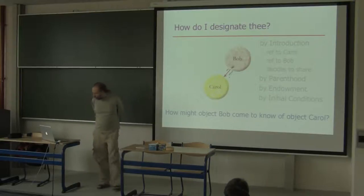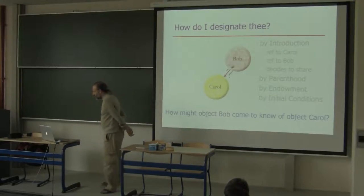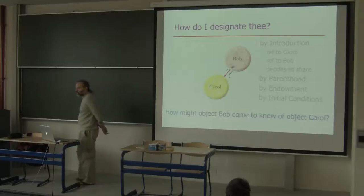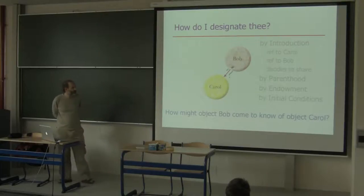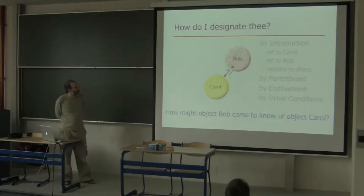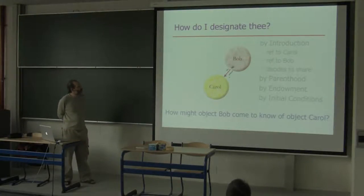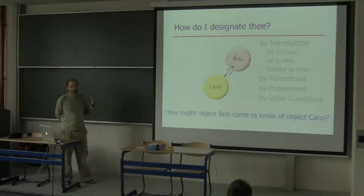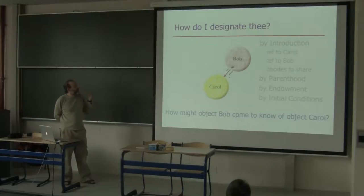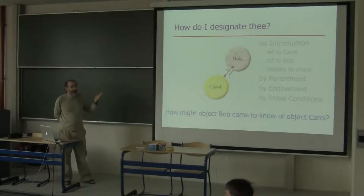The foundational relationship in object-oriented programming is the points-to relationship. When you have two objects — Bob and Carol — what are all the ways in which Bob might come to point to Carol? The pointer is a means of designation. What are all the ways in which Bob might come to designate Carol with his pointer? Let us count the ways.